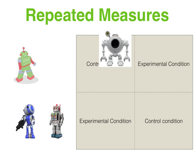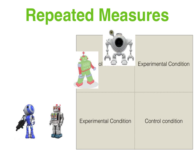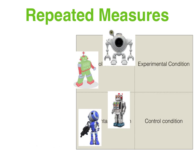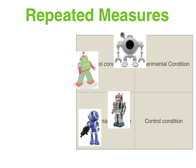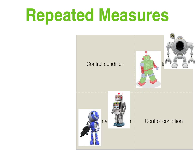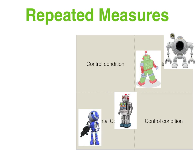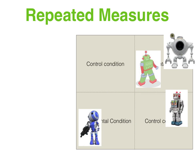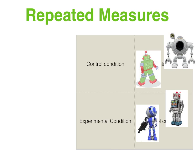For visual emphasis: if we are counterbalancing, half will do the control condition first and half will do the experimental condition first, and then they swap. Those participants that did the control condition first will now do the experimental condition second, and those that did the experimental condition first will now do the control condition. So that if there is a practice effect, half will go better under the experimental condition and half will go better under the control condition, and therefore the two groups' improvements will cancel each other out.